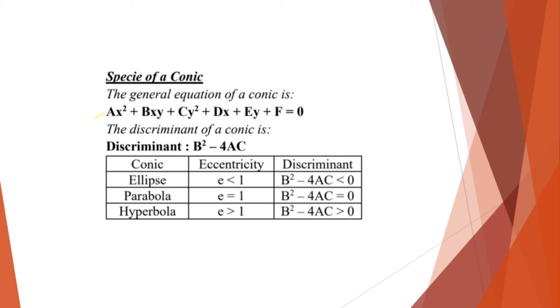So I think you are familiar with this. So in here, we have these three conics: the ellipse, the parabola, and hyperbola. So with a given general equation of a conic, and when you identify the discriminant, you will immediately know what type of conic it is. So in here, if the eccentricity is less than 1, then your conic is an ellipse.